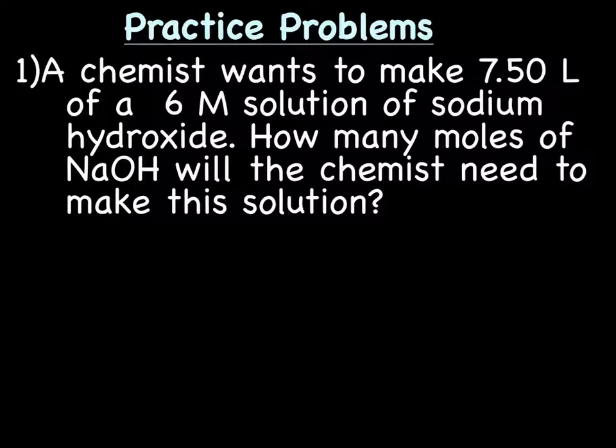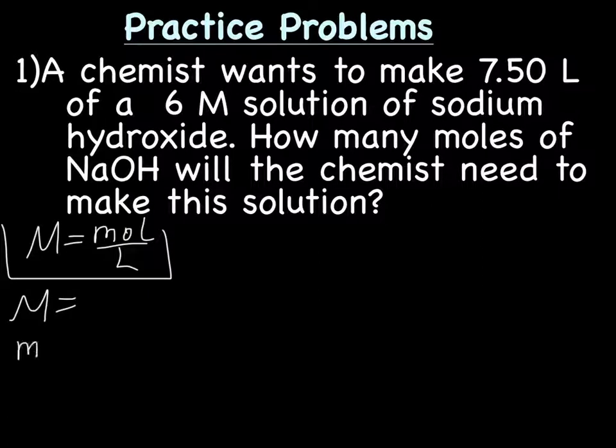So our practice problem: A chemist wants to make 7.5 liters of a 6 molar solution of sodium hydroxide, NaOH. How many moles of NaOH will the chemist need to make this solution? Remember, we're using the formula molarity equals mol over liter. And the way I do this is I make a list of all the possible variables. We have molarity, we have moles, and we have liters. And then I read through the story. A chemist wants to make 7.5 liters. Well, that's liters.